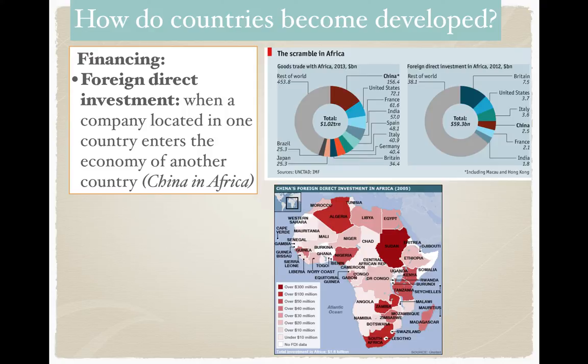One of the key examples of that in modern day is China's foreign direct investment in Africa. The bottom map is from 2005, so it's somewhat outdated, but it certainly shows us the extent to which China's companies are directly involved in investment in Africa.